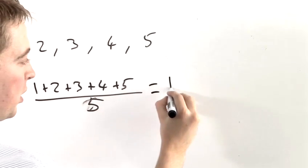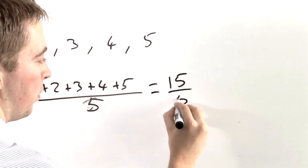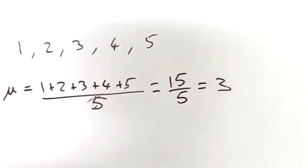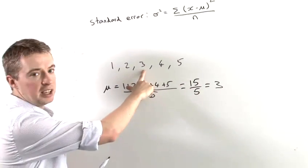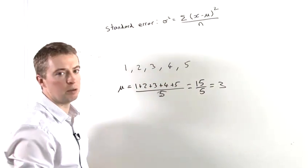And that is 15 over 5, which is equal to 3. And we can fairly obviously see that from here, 3 is in the middle of them anyway.